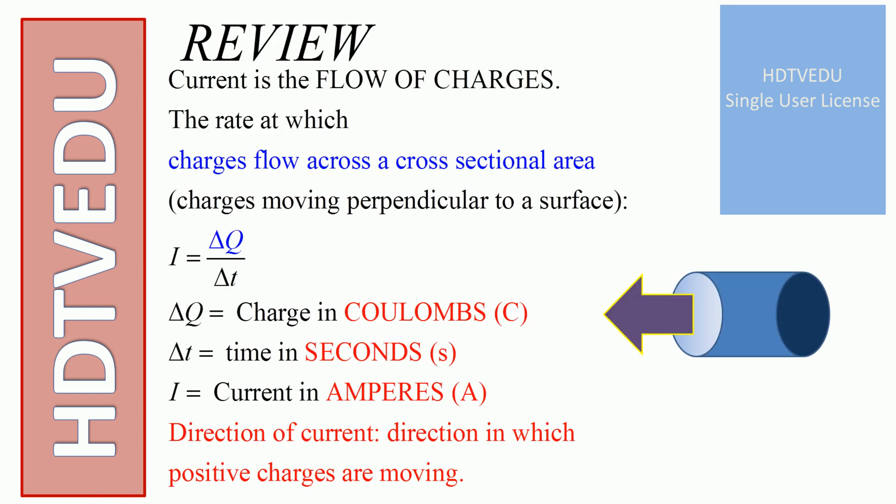Current is the flow of charges, the rate at which charges flow across a cross-sectional area. Charges moving perpendicular to the surface, and that is given by I equals delta Q over delta t.